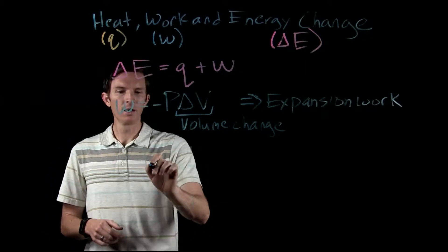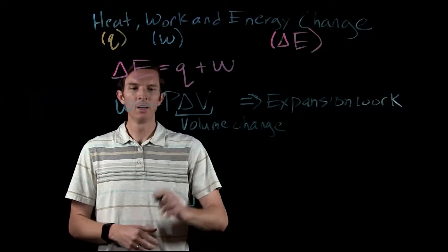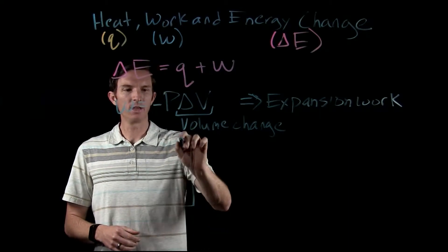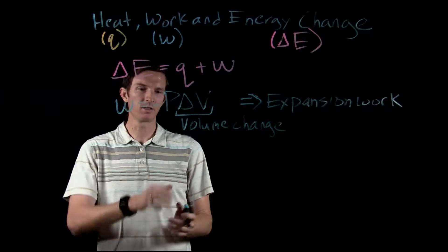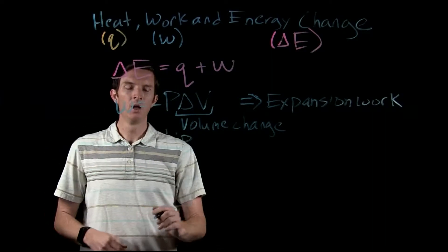We have a container here and we have maybe a movable piston sitting on top of that. So sitting on top of this is a constant pressure. When we're talking about expansion work, it's got to have a constant pressure sitting on it. This is this p-value here.